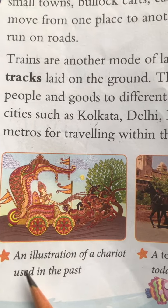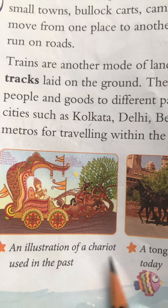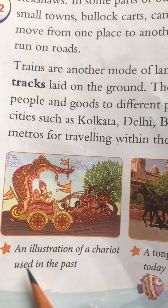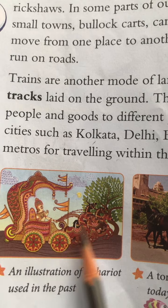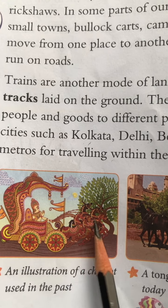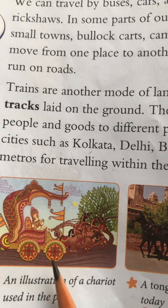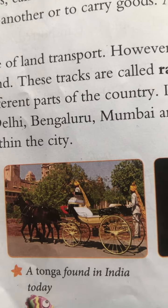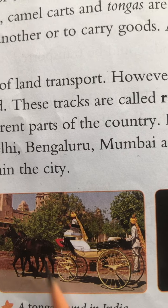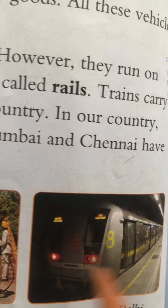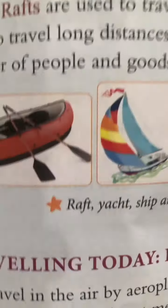Dekho yahan illustration hai — pehle ek chariot tha jo pooraane zamane mein means of transport tha, jiske through ek jagah se doosari jagah par jaaya jaata tha. Uske baad tanga — found in India today — aajkal bhi tanga hamaari country mein paaya jaata hai. Metro in Delhi — Delhi mein metro train hoti hai.